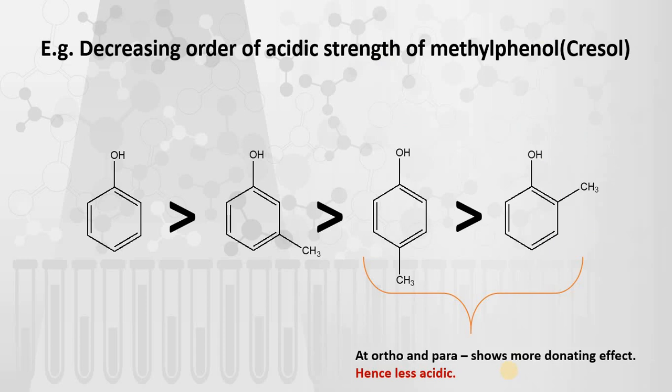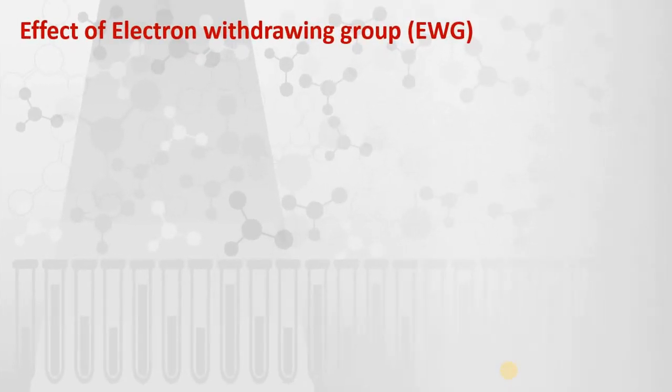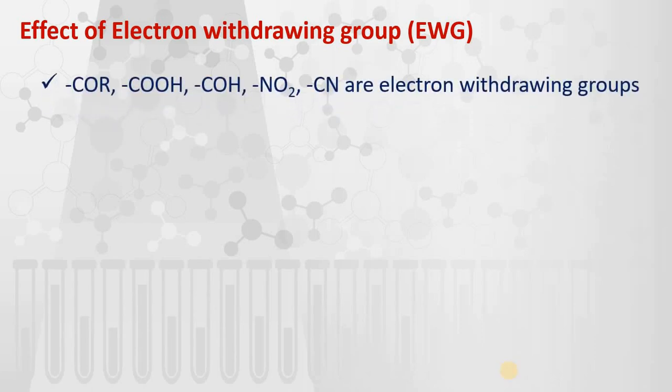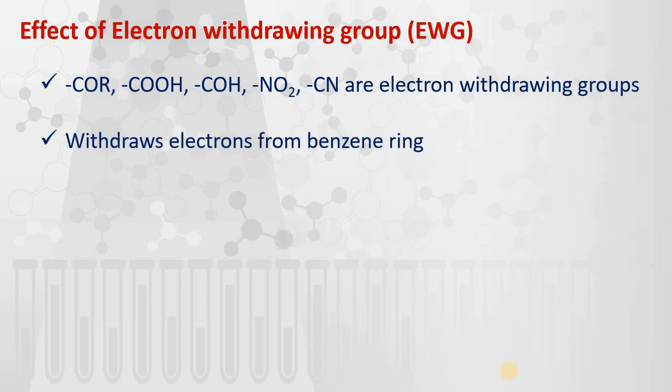Now for electron withdrawing groups (EWG): examples include COR, COOH, CHO, NO2, and the cyanide group. When attached to the benzene ring, these groups show electron withdrawing nature and withdraw electrons from the benzene ring.